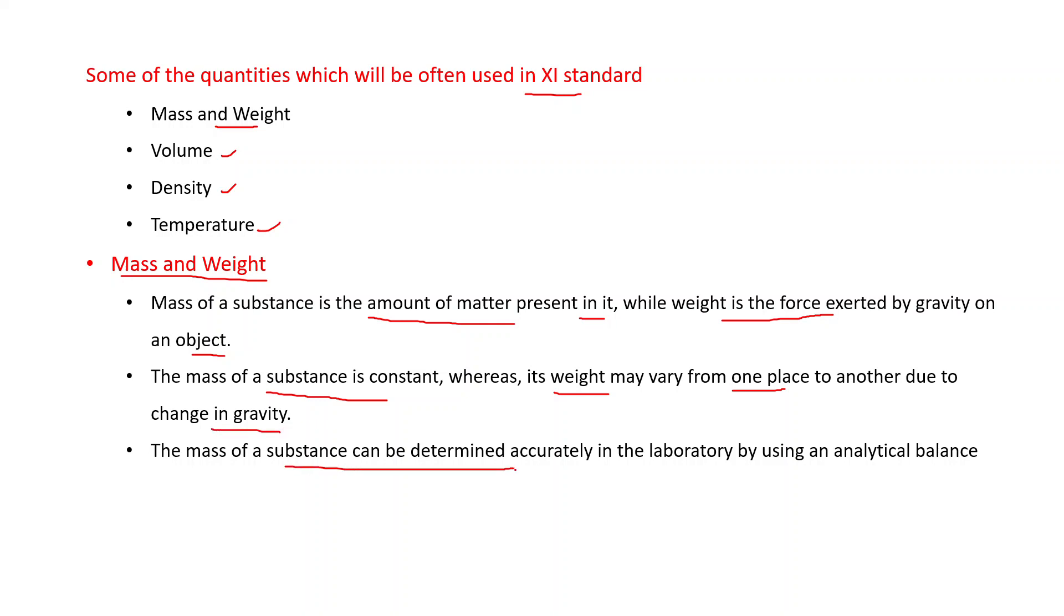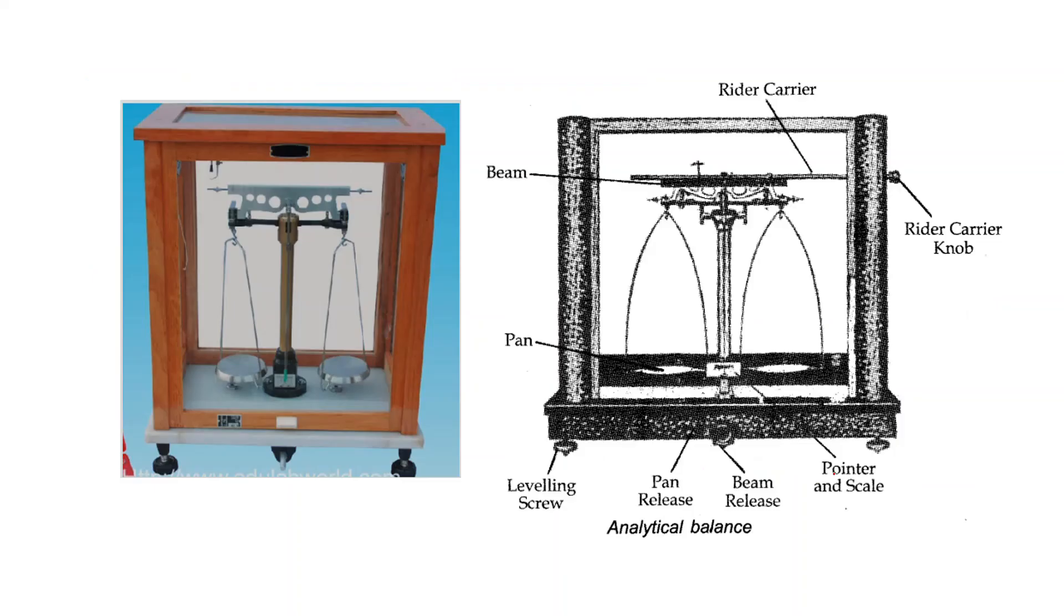Mass of a substance can be determined accurately in the laboratory by using an analytical balance. These are the analytical balances. When you come to the chemistry lab, you can see these. Otherwise, when you go to the market to a jeweler's shop, you can see such type of balance. With the help of these balances, you can determine up to the fourth place of decimal accurately.